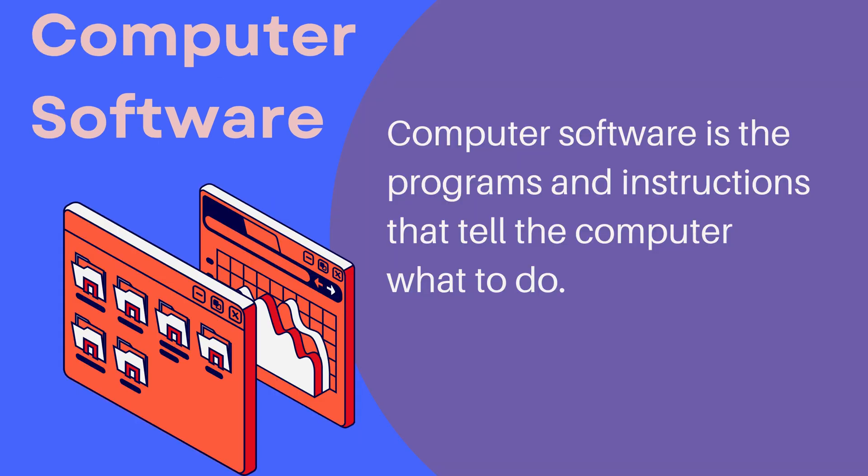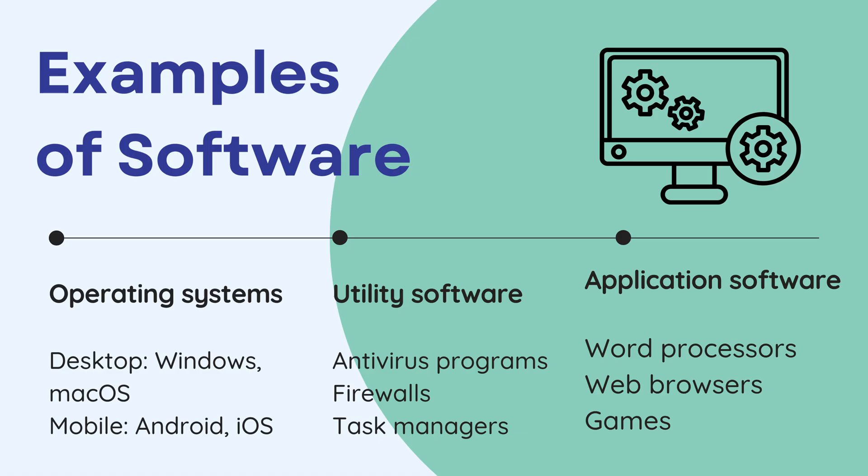Computer software is the programs and instructions that tell the computer what to do. Some examples of software include system software, such as operating systems like Windows, macOS, or Linux, which manage hardware and run other software.